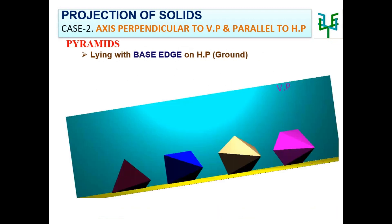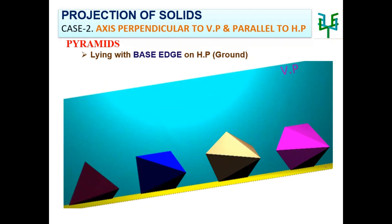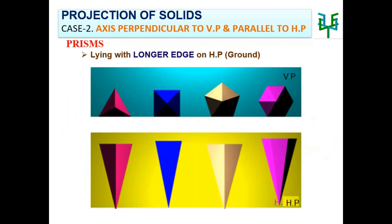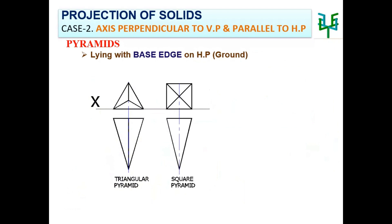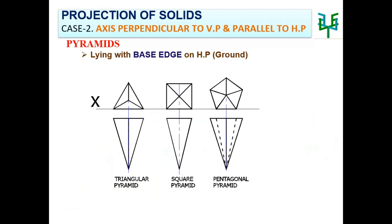In the case of pyramids, with the same condition — axis perpendicular to VP and parallel to HP — a pyramid may rest with its base edge on HP. One edge of the base should be on the XY line. Examples: Triangular pyramid, Square pyramid, Pentagonal pyramid, Hexagonal pyramid.